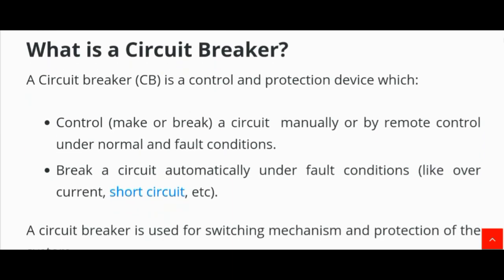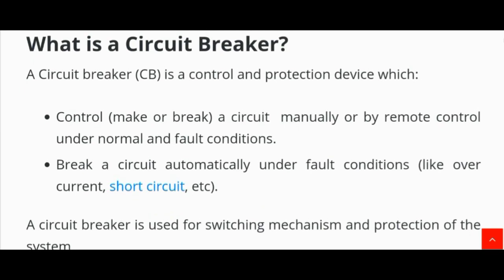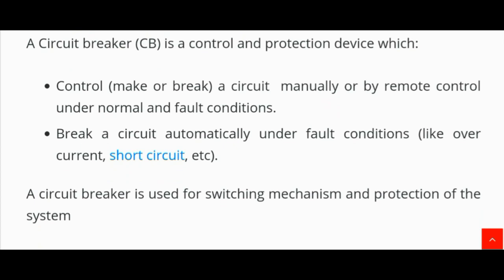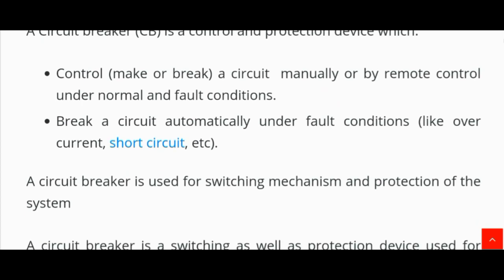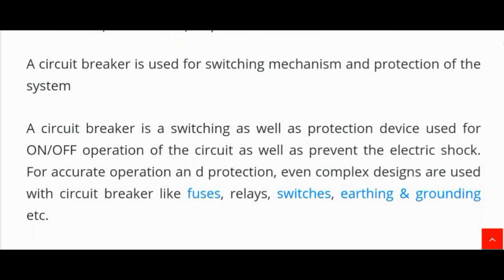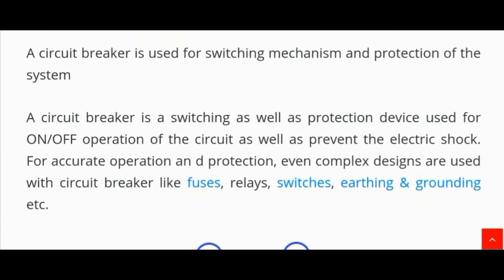The first topic is: what is a circuit breaker? A circuit breaker (CB) is a control and protection device which can make or break a circuit manually or by remote control under normal and fault conditions, such as overcurrent or short circuit. A circuit breaker is used for switching mechanism and protection of the system.